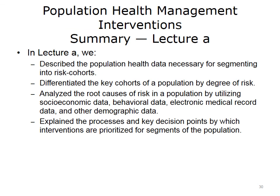We will now review the objectives of Lecture A of Population Health Management Interventions. We described the population health data necessary for segmenting the population into risk cohorts of low, medium, or high risk. We differentiated the key cohorts of a population by degree of risk. We analyzed the root causes of risk in a population by utilizing various sources of data, including socioeconomic, behavioral, electronic medical record, and other demographic data. And we explained the processes and key decision points by which interventions are prioritized for segments of the population.